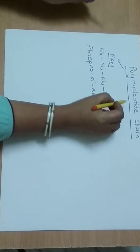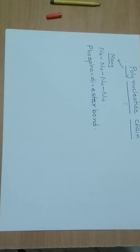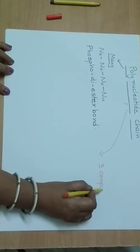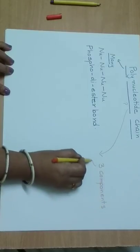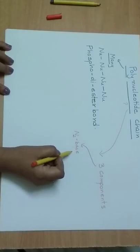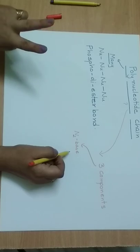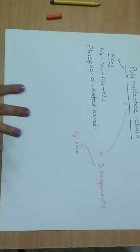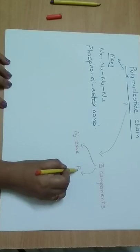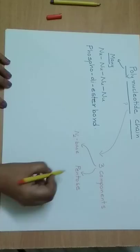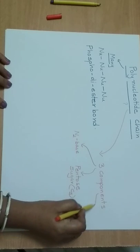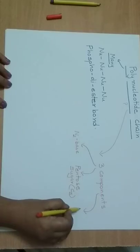Let's recall what a nucleotide is. A nucleotide is made up of three components. The first component is a nitrogenous base. The second component is a pentose sugar, which is a five-carbon sugar. The third component is phosphate.